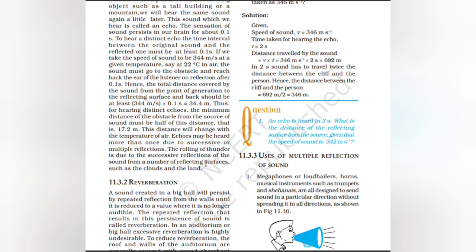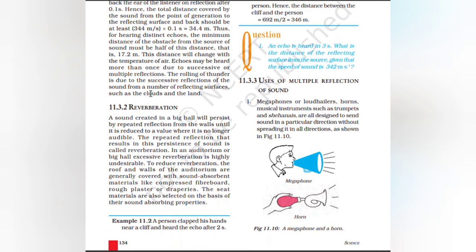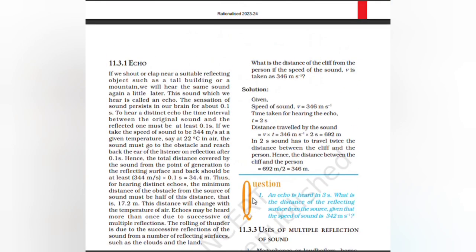Echoes may be heard more than once due to successive or multiple reflections. The rolling of thunder is due to successive reflections of sound from a number of reflecting surfaces such as clouds and the land. Reverberation: A sound created in a big hall will persist by repeated reflection from the walls until it is reduced to a value where it is no longer audible. This repeated reflection resulting in the persistence of sound is called reverberation. In an auditorium or big hall, excessive reverberation is highly undesirable. To reduce reverberation, the roof and walls of the auditorium are generally covered with sound-absorbent materials like compressed fibreboard, rough plaster, or draperies. The seat materials are also selected on the basis of their sound-absorbing properties.